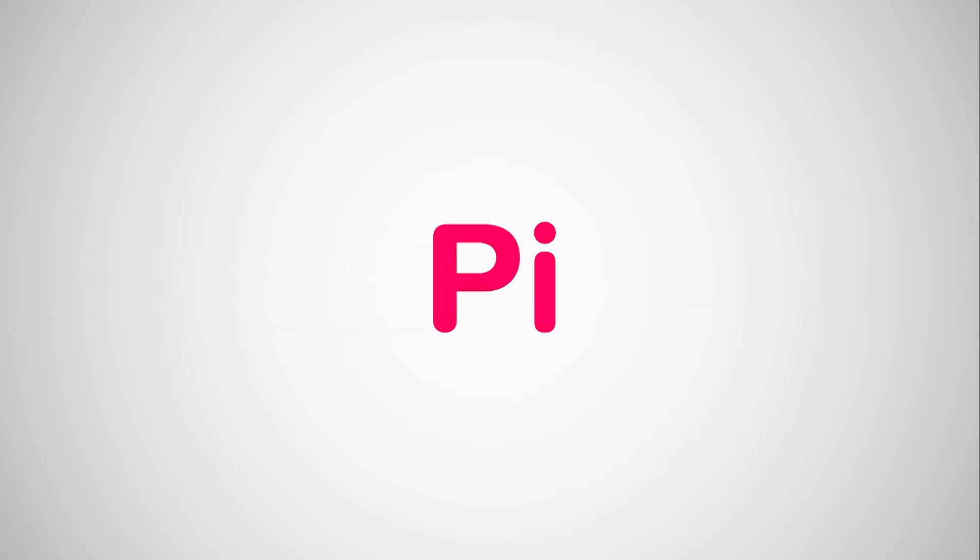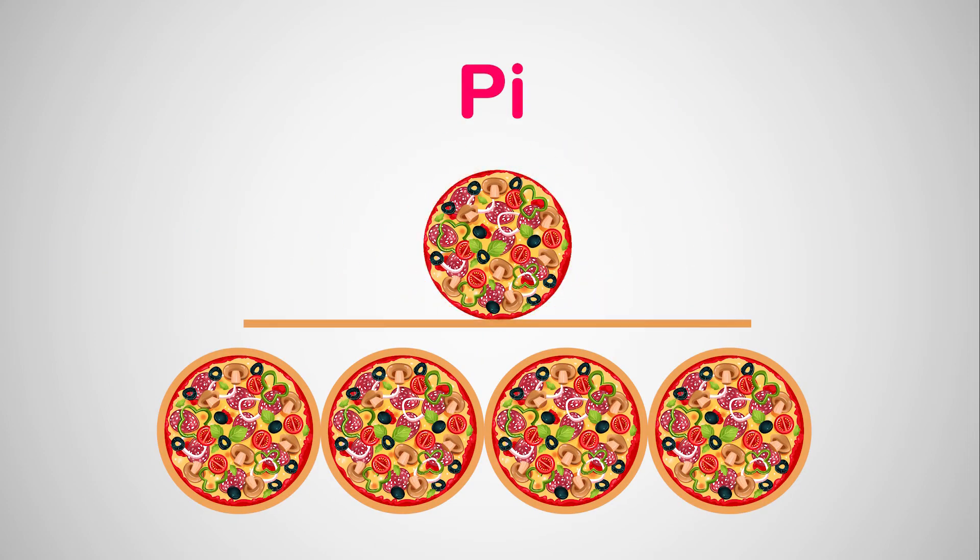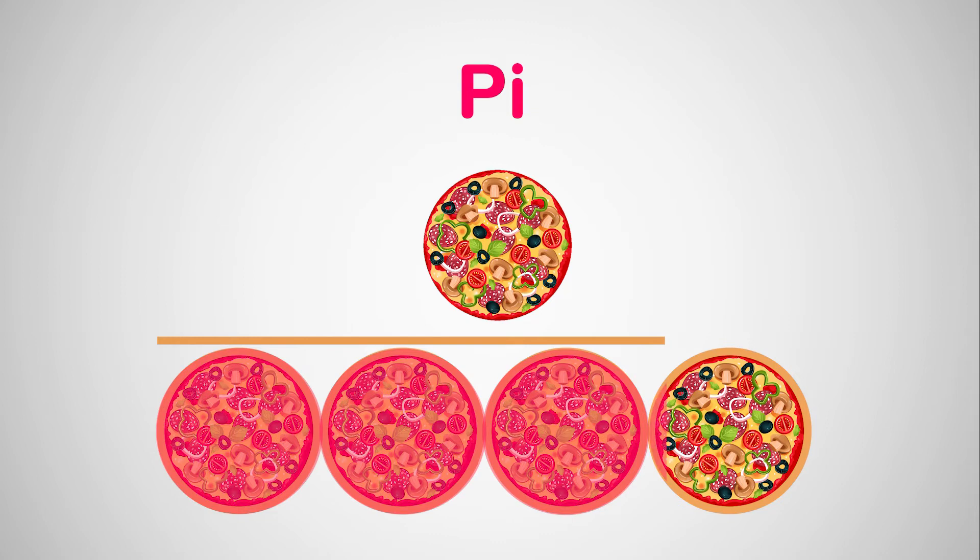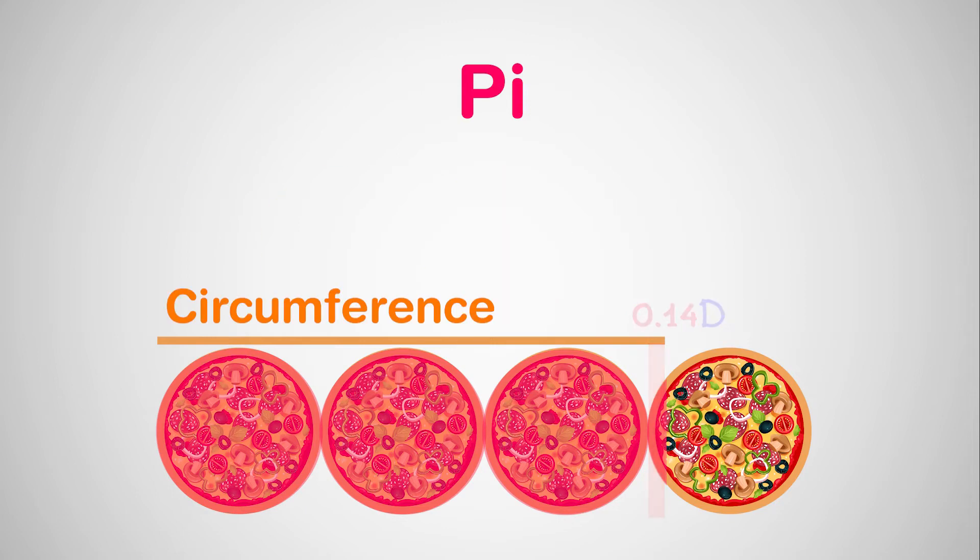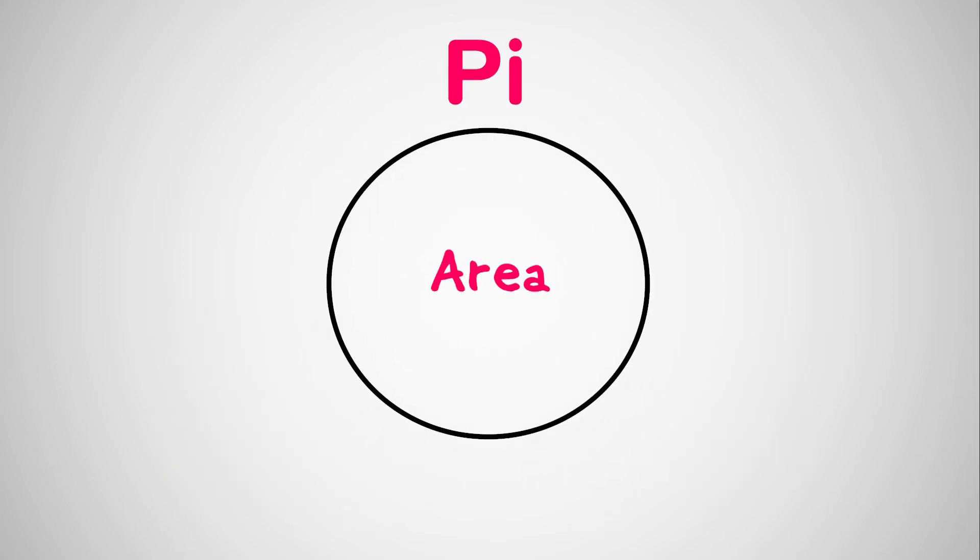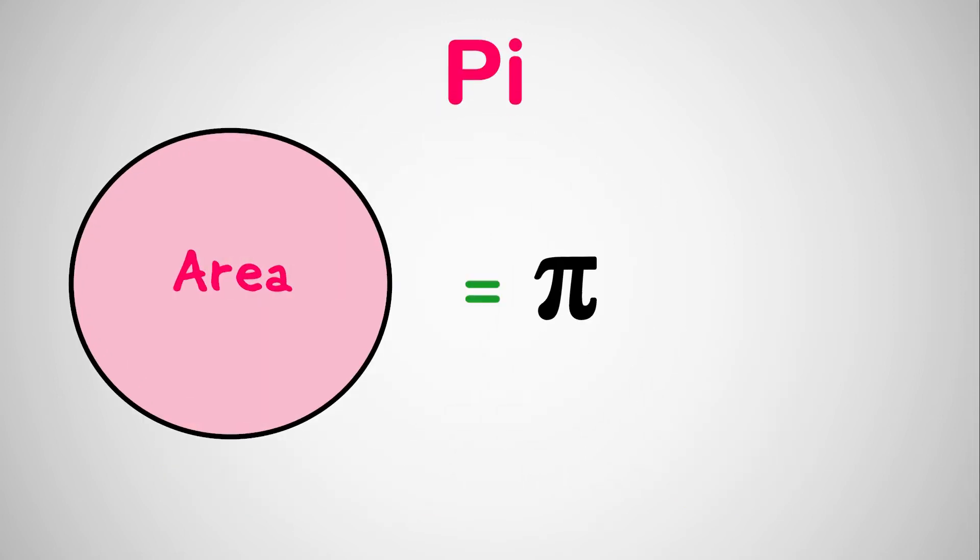But first, pi with pizzas. Remove the crust from one pizza and place it on top of the others. And you'll find it goes across three and a bit pizzas. This is pi. This little overhang going onto the fourth pizza is roughly 0.14 times its diameter. Thus, circumference of a circle is roughly 3.14 times its diameter. Furthermore, pi has a connection to the area of a circle which is equal to pi r squared.